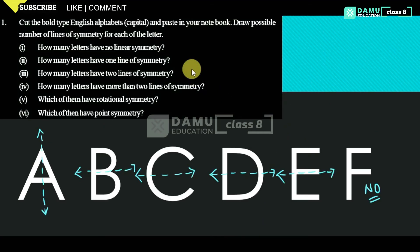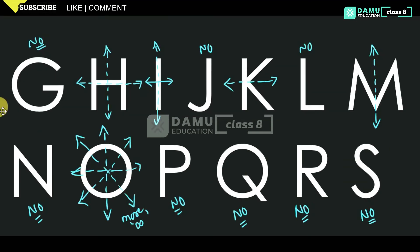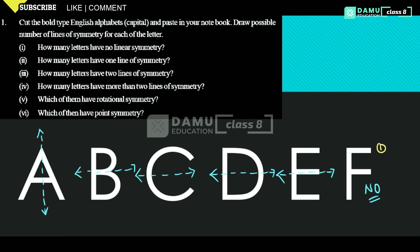So after writing all the symmetrical lines for the different letters, we have to answer the following questions. First: how many letters have no line of symmetry? Counting them — F, G, J, L, N, P, Q, R, S, Z — that is ten letters which don't have a line of symmetry.